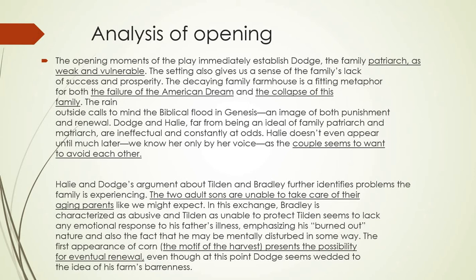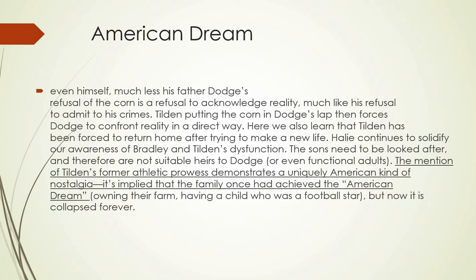The mention of Tilden's former athletic powers demonstrates a uniquely American kind of nostalgia. It is implied that the family once achieved the American dream — America as a land where one could make all dreams come true. This family once held dignity and a higher stature in society: they owned a fruitful farm and had a son who was a football star. But now, just like the American dream, their family is broken — they own a barren farm and have two collapsed sons. The failure of the American dream becomes the next theme.